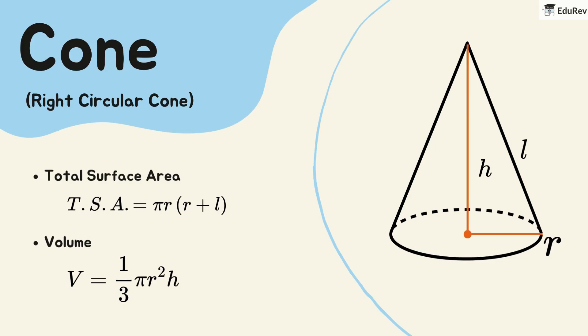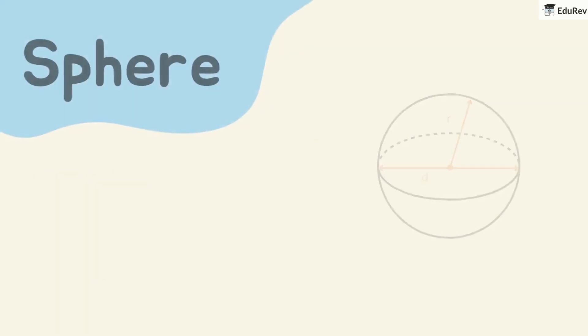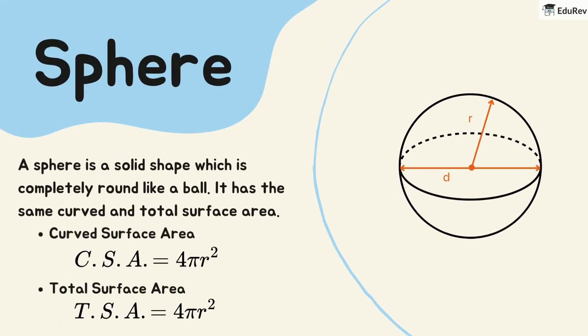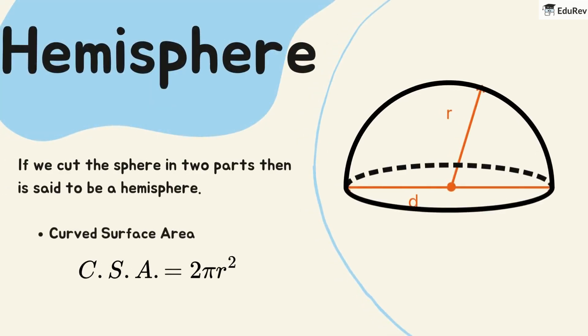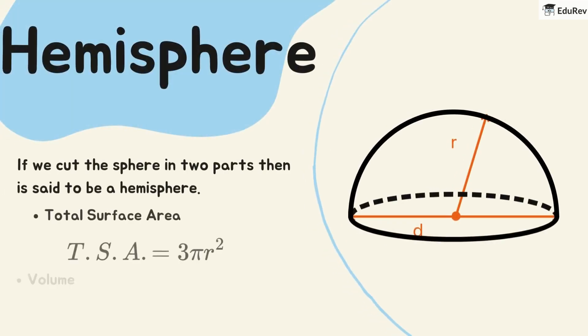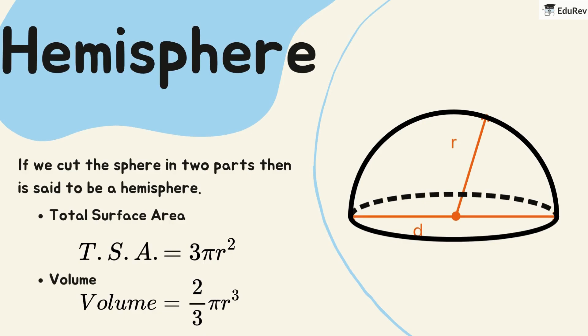The volume of a cone is one-third times pi times the square of the radius times the height. A sphere is a solid shape that is completely round like a ball. It has the same curved and total surface area — both are four times pi times the square of the radius. The volume of a sphere is four-thirds times pi times the cube of the radius. If we cut a sphere into two equal parts, we get a hemisphere. The curved surface area of a hemisphere is two times pi times the square of the radius. The total surface area of a hemisphere is three times pi times the square of the radius. The volume of a hemisphere is two-thirds times pi times the cube of the radius.